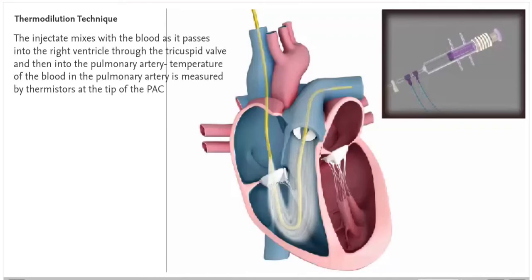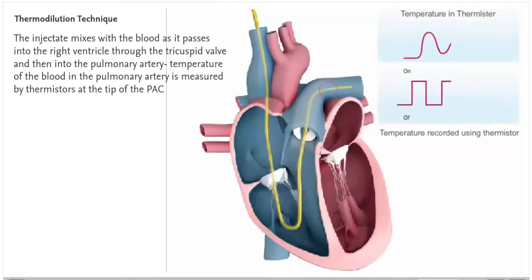The injectate mixes with the blood as it passes into the right ventricle through the tricuspid valve and then into the pulmonary artery. Temperature of the blood in the pulmonary artery is measured by thermistors at the tip of the PAC.